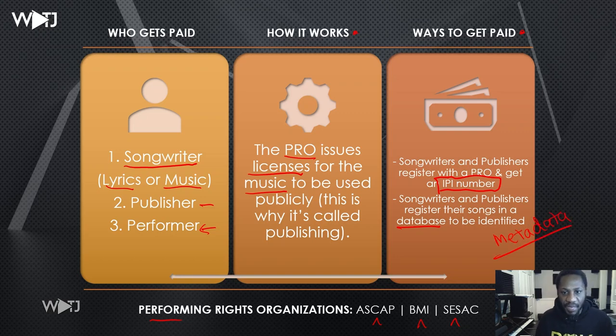Songwriters and publishers register their songs in a database, and the songs are identified when they're streamed or used publicly. The way they are identified is by the use of metadata. Examples of metadata include the song title, the writers of the song, the length of the song, the producers, the artists that perform the song, and other specific pieces. The misconception is that you upload the song file itself to the PRO — you don't. You just tag all the information about the song, and then they match that with the streaming service.